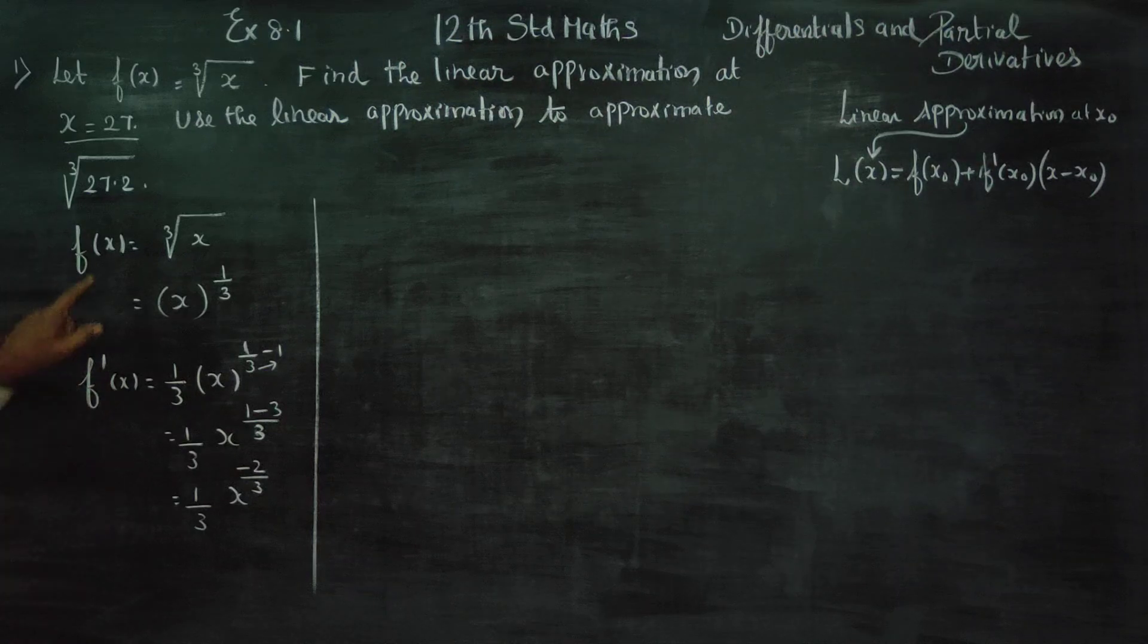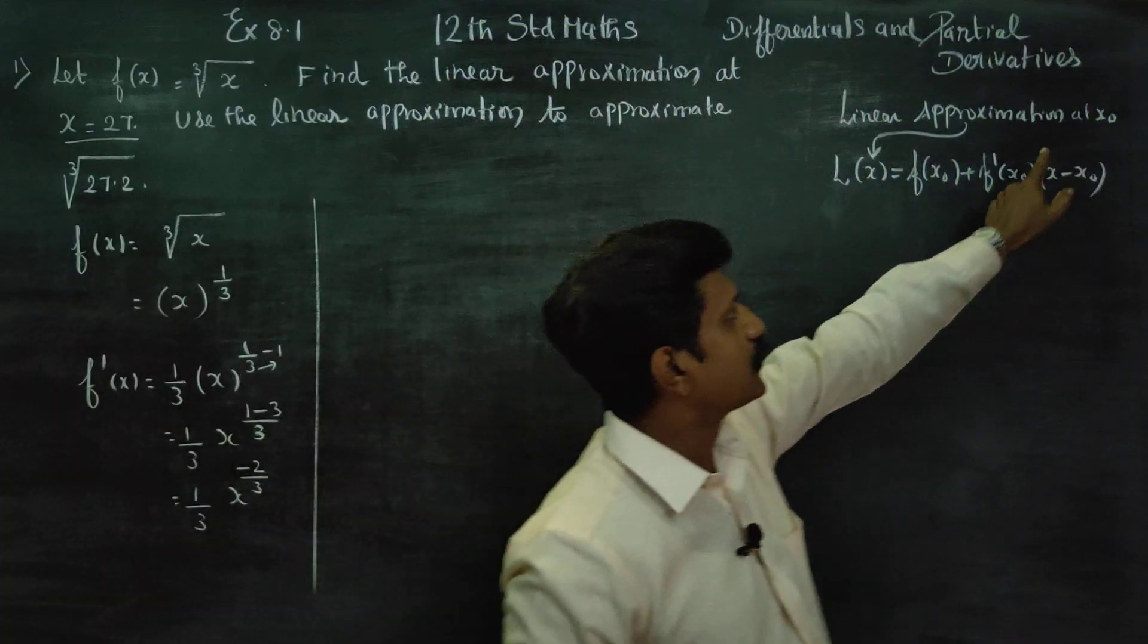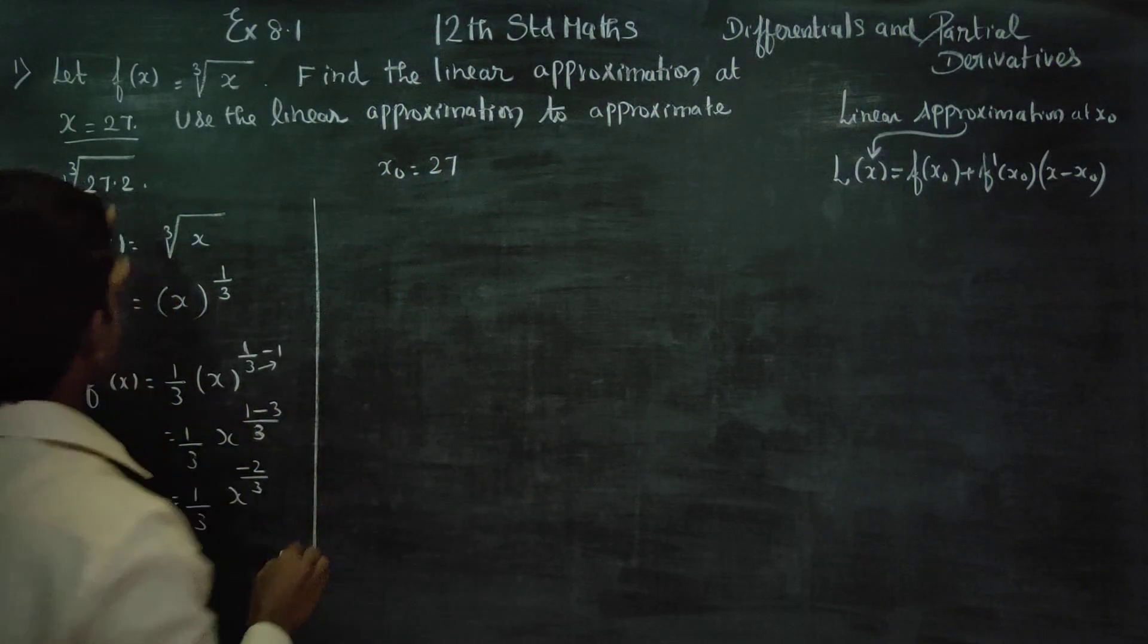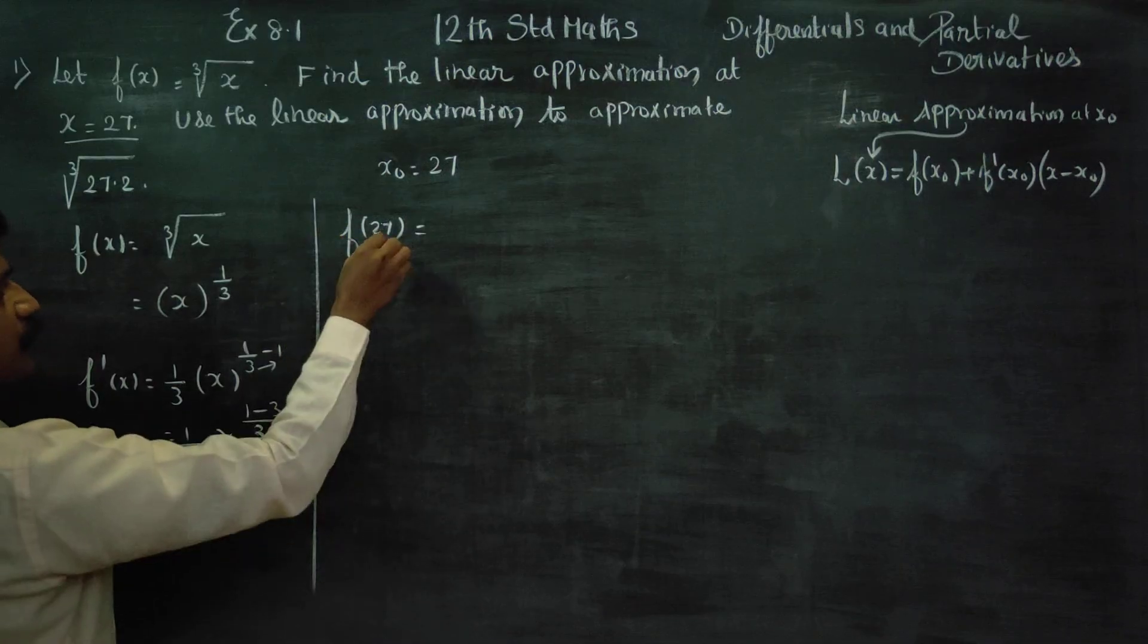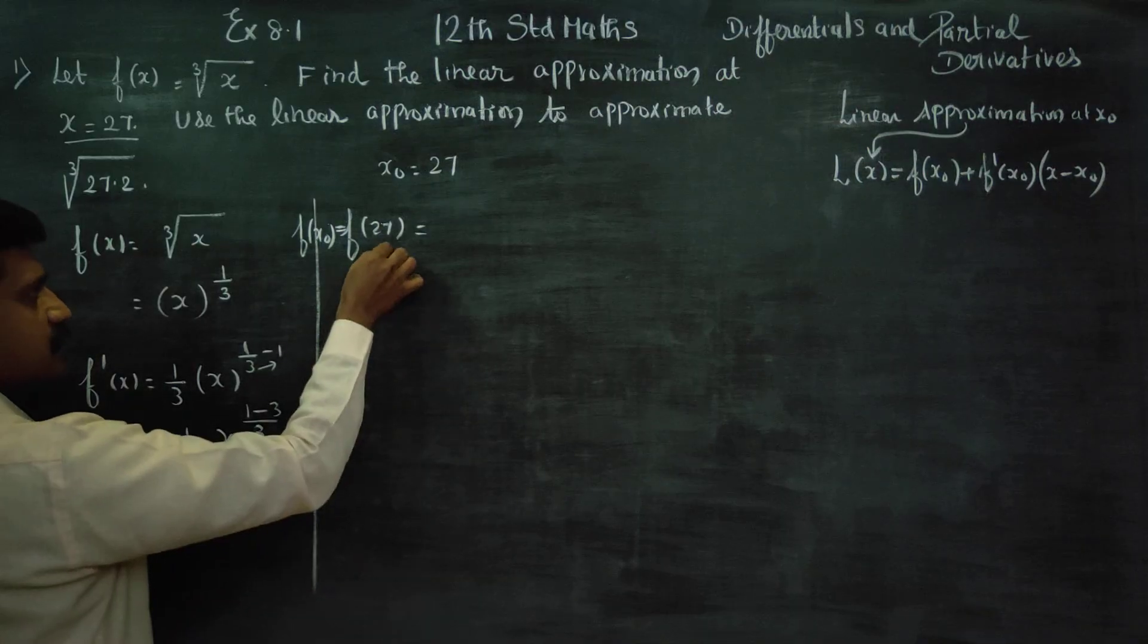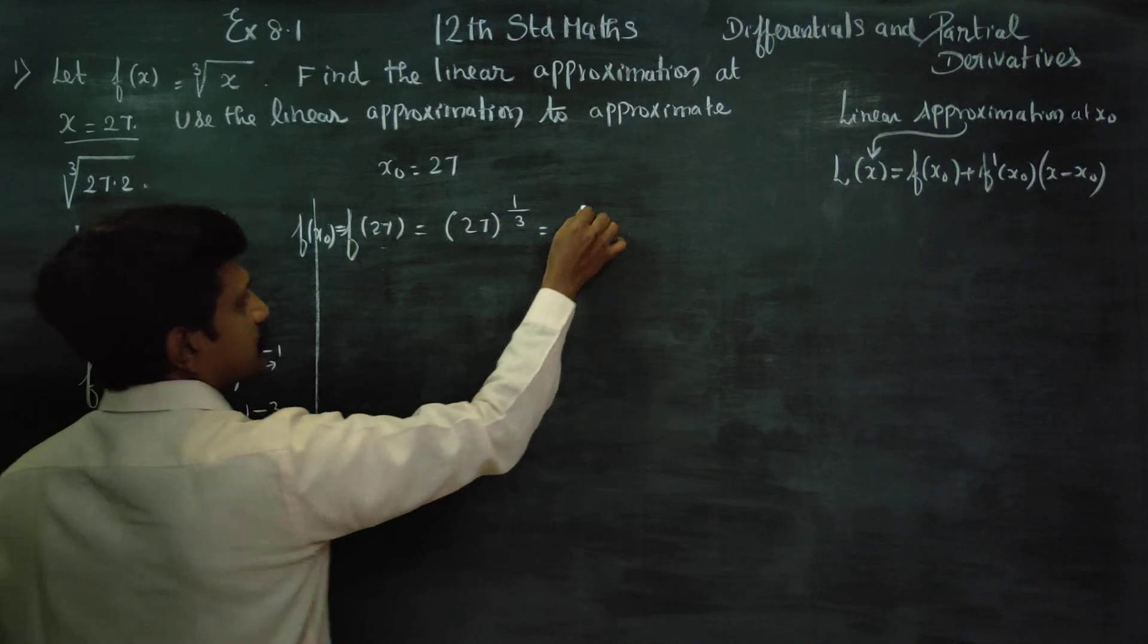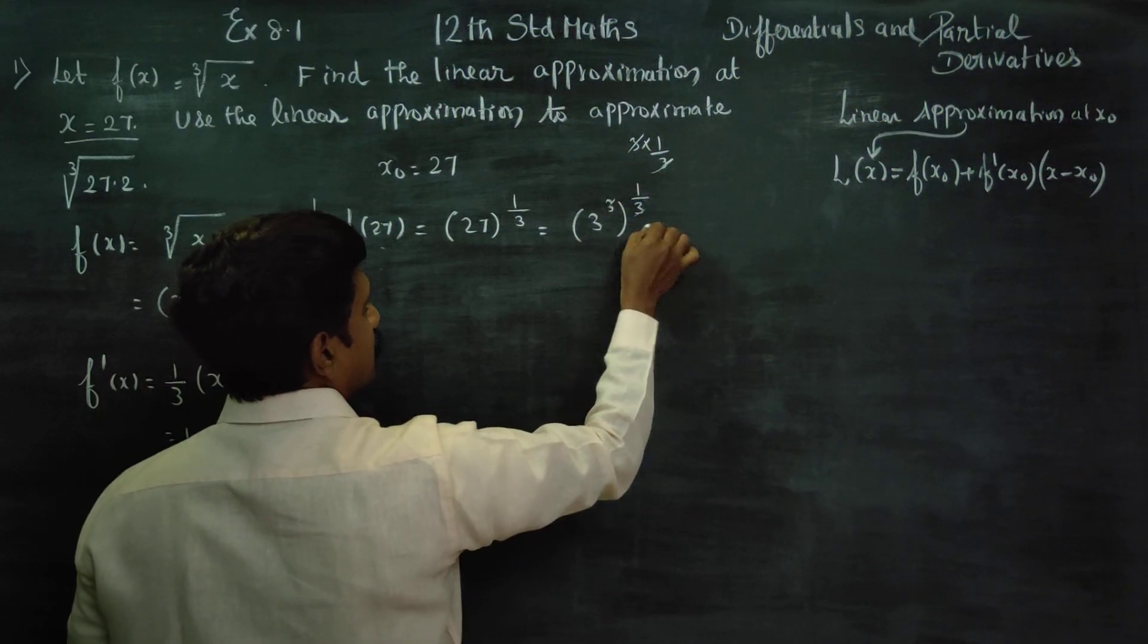Now we need to find values at x equals 27. Actually, x equals 27 is the comfortable value given. According to our formula, we consider this value as x0, so x0 equals 27. We need to find f(27). f(27) equals 27^(1/3), which equals (3^3)^(1/3). Powers multiply, so 3 cancels to give answer 3.